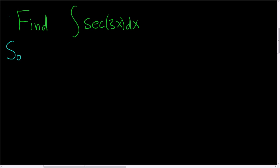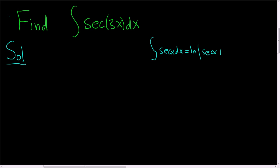This problem relies on the fact that we already know the formula for the antiderivative of secant. Recall that the indefinite integral of secant, when you integrate it, gives you the natural log of the absolute value of secant plus tangent.